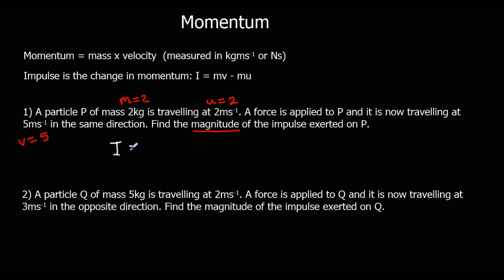So impulse equals MV minus MU. So two fives minus two twos. So 10 take away 4, and that would be 6 newton seconds.